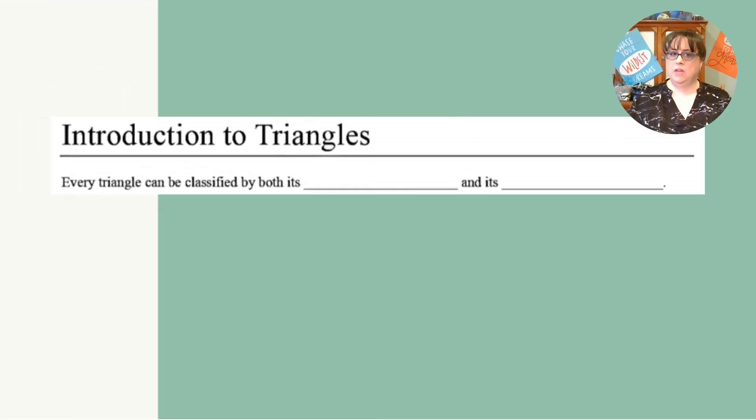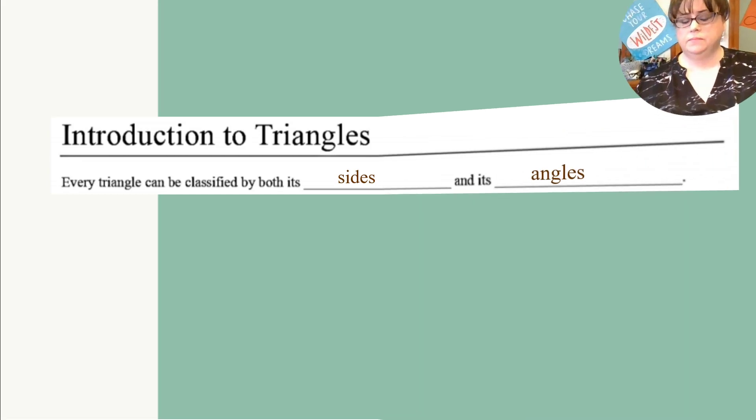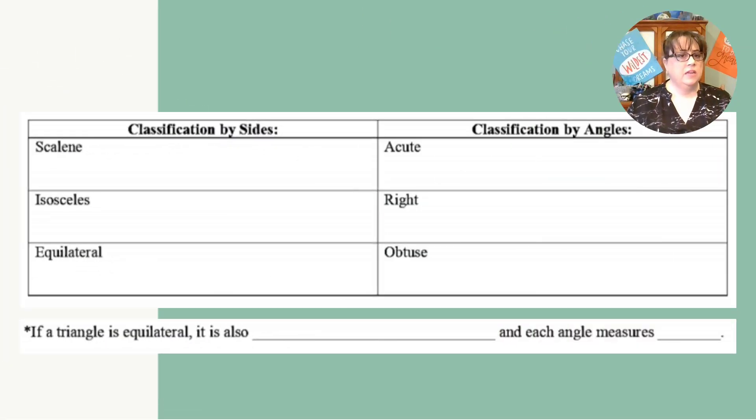Let's begin with an introduction to triangles. Every triangle can be classified by both its sides and its angles. So let's look at its classification by its sides, and there's three different ways we can classify by its sides: scalene, isosceles, and equilateral.